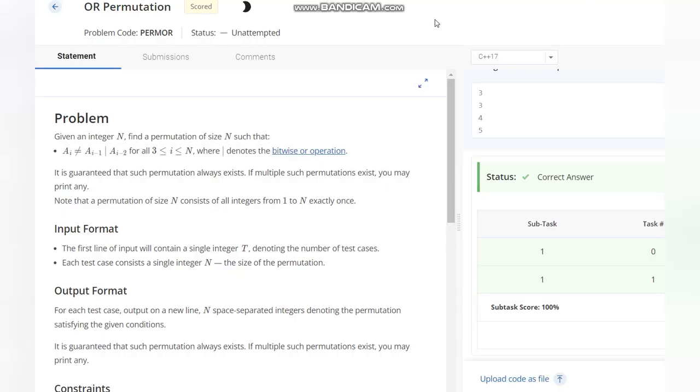Hello everyone, welcome to the channel. So here we are discussing the question OR Permutation on CodeShift. The problem states that we are given an integer n, find a permutation of size n.